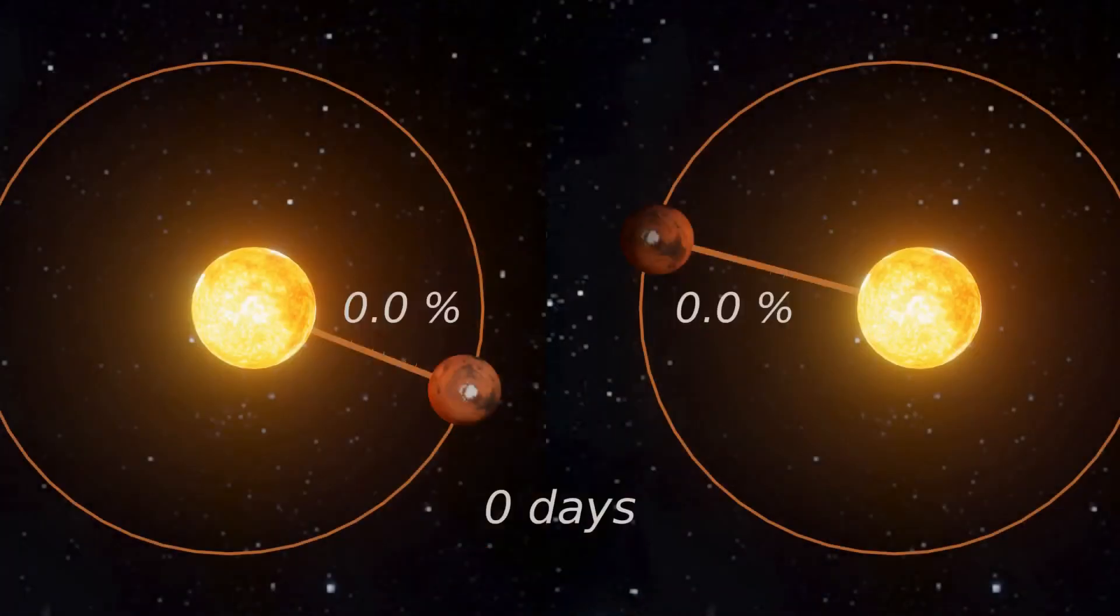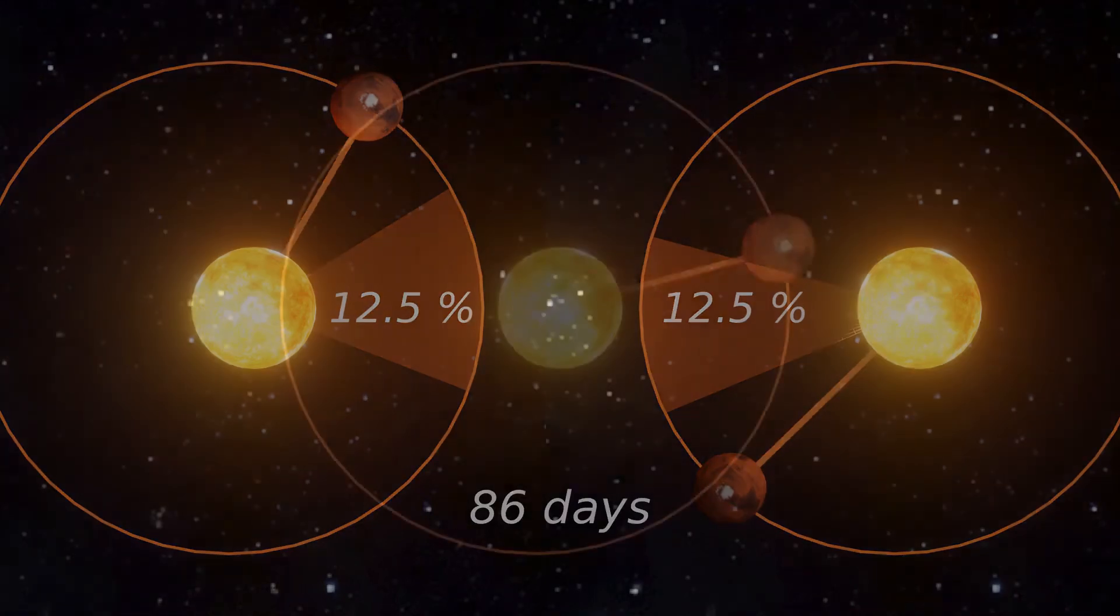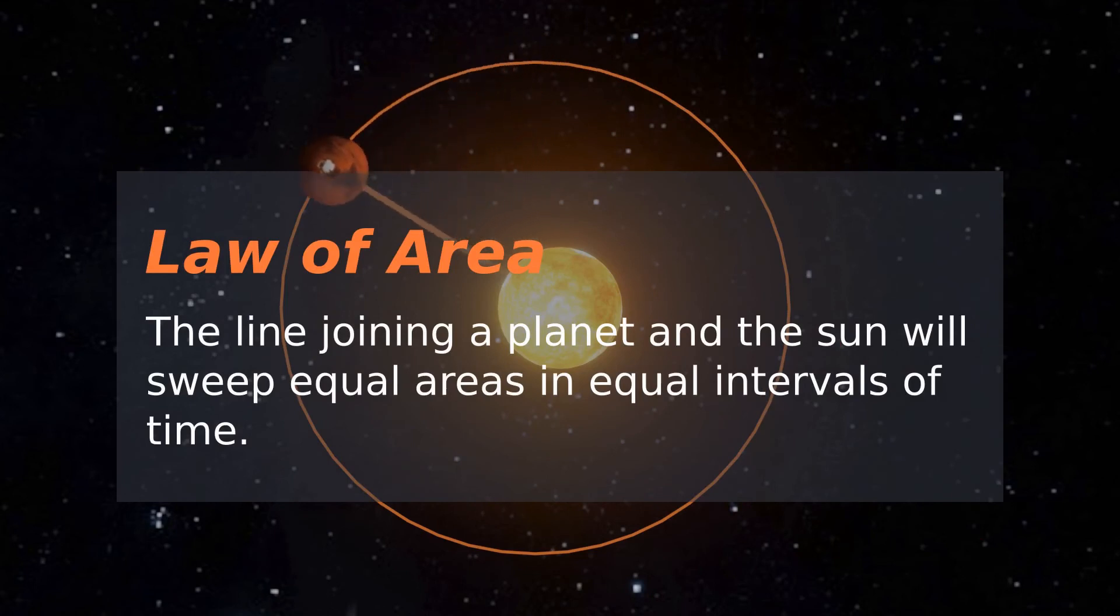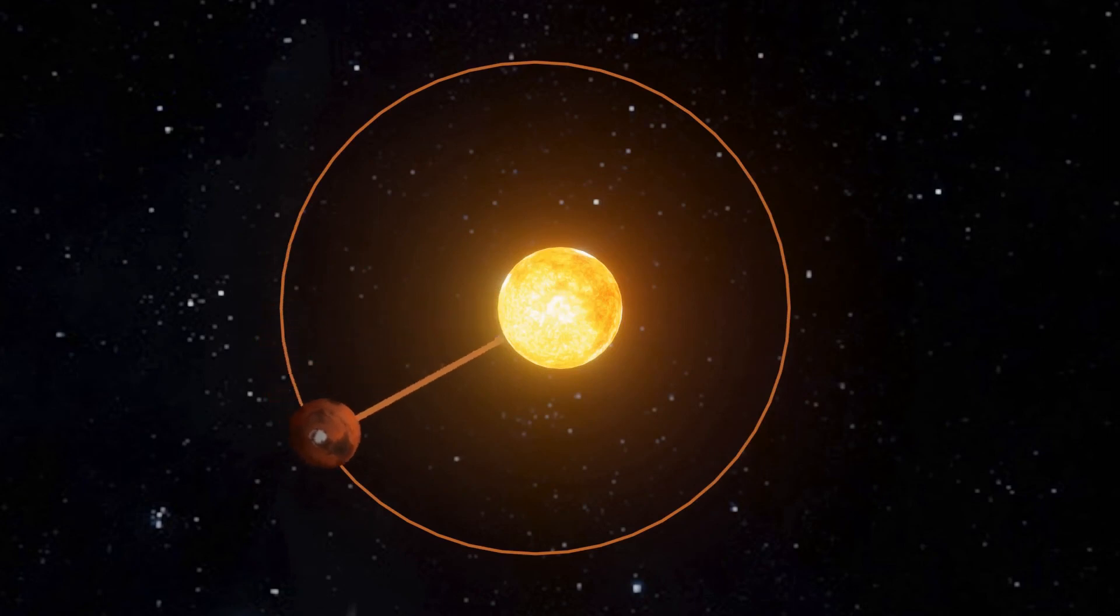For example, the line joining the Sun and Mars will sweep 12.5% of total area every 86 days. This law is called law of areas, which in other words says dA/dt, called the areal velocity, is a constant. By this law, planets move fast when close to the Sun and slow when far away.